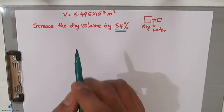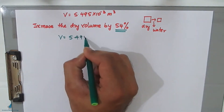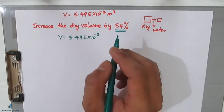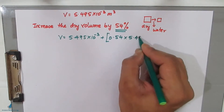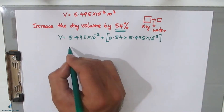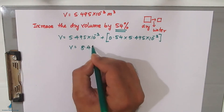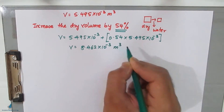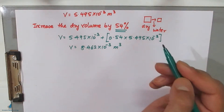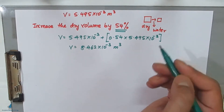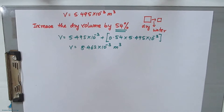When we add 54% to the dry volume, the new volume becomes: V = 5.495×10⁻³ + (0.54 × 5.495×10⁻³) = 8.462 × 10⁻³ m³. This extra volume ensures you will not fall short of materials when filling the slump cone during the experiment.